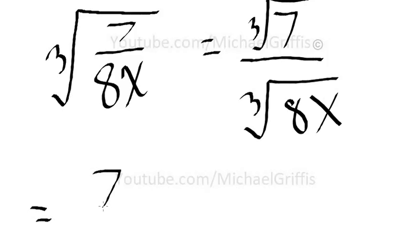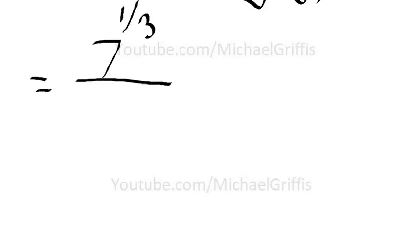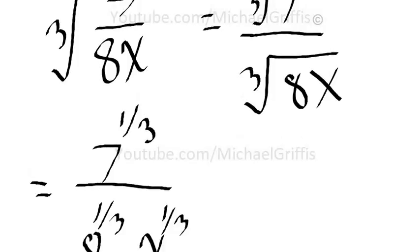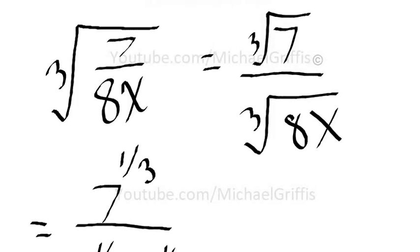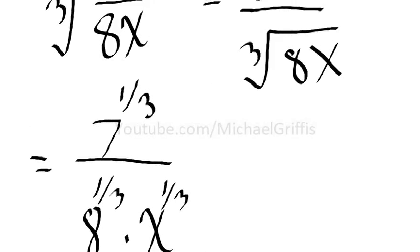All right, so the numerator is going to become seven raised to the one-third power over eight raised to the one-third times X raised to the one-third. We're even going to just split this up: eight raised to the one-third times X raised to the one-third. Okay, so you should be able to, at this point in time, if you've been watching all these videos up to here, you should be able to figure that out.